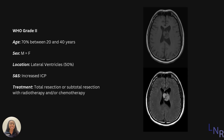If you guessed a central neurocytoma, you'd be correct. Central neurocytomas are a WHO grade 2 tumor that affects ages 20 to 40 years old 70% of the time. They affect males and females equally. They're usually located at the lateral ventricles, pushing against the septum pellicidum.